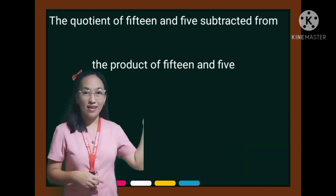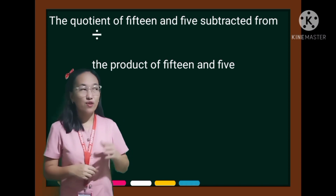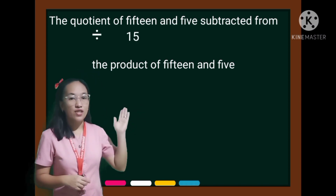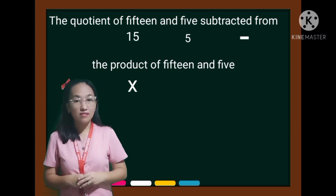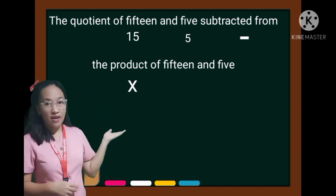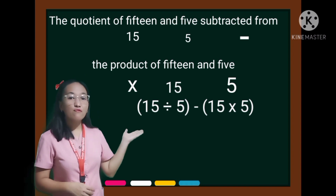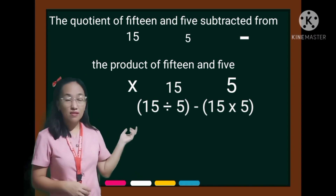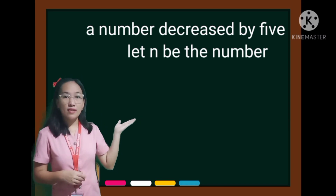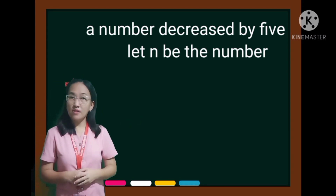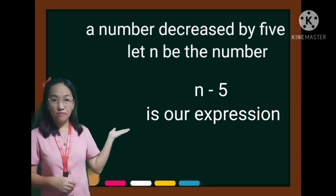And this is our next example. To translate it, we have the division sign for the quotient of the numbers 15 and 5, subtracted from is the minus sign, and X for the multiplication sign. So 15 divided by 5 minus 15 times 5 is the expression. And for the last example: a number decreased by 5. Let N be the number. So N minus 5 is our expression.